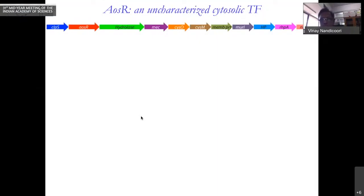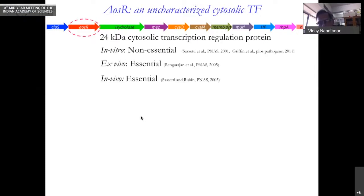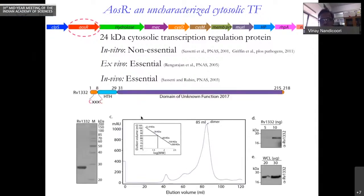This transcription factor is part of an 11-gene operon. It is a 24-kilodalton cytosolic transcription factor. It is in vitro non-essential. Ex vivo and in vivo it is essential. Ex vivo is a cell line infection model. It is a very small transcription factor with two cysteine residues in the N-terminal region and nobody had characterized any of the 51 bacteria in which it was present.